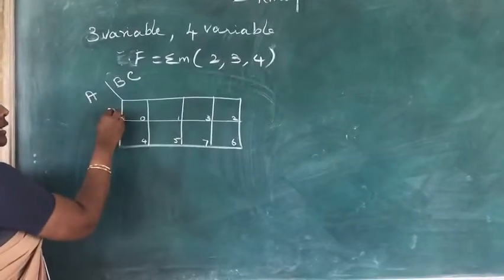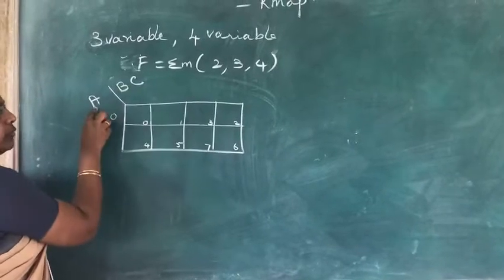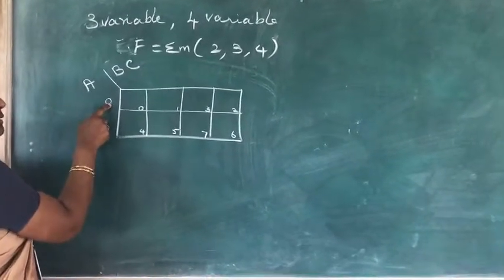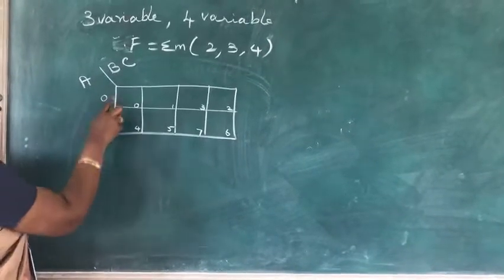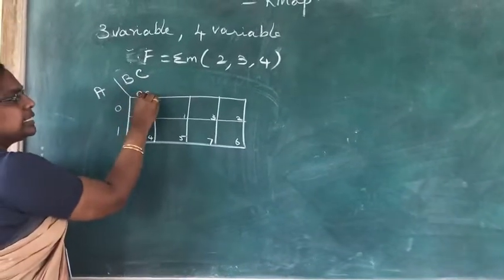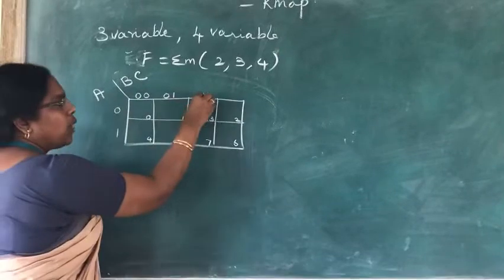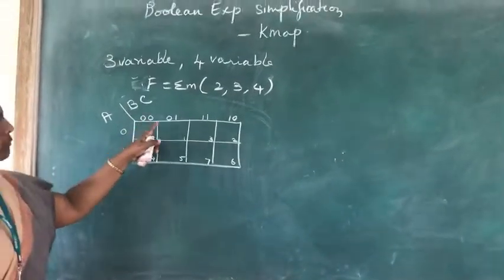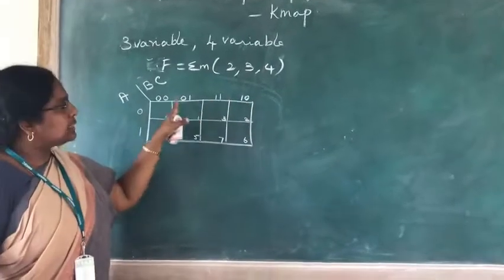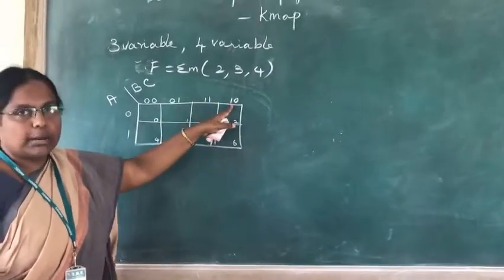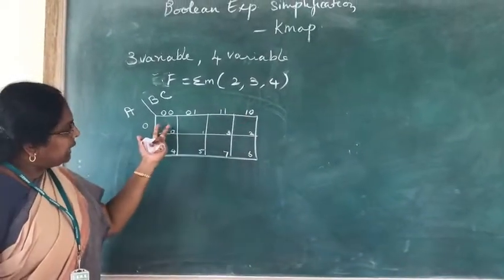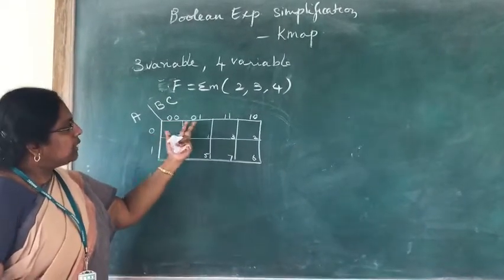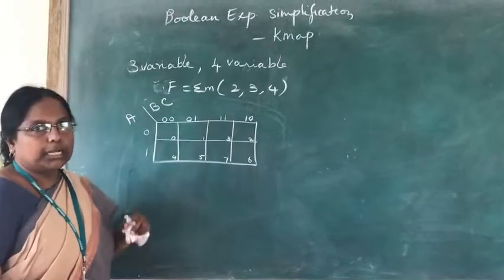The labels for variables of each row and column are as follows: for A, the possible values are 0 or 1. For BC, the column order follows gray code: 00, 01, 11, 10. The reason we follow this order is gray code numbering, so that the min terms in every adjacent cell will vary by only one variable.